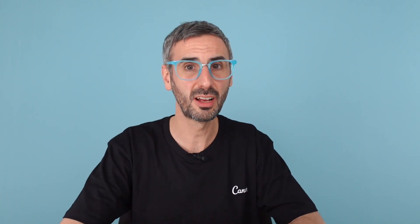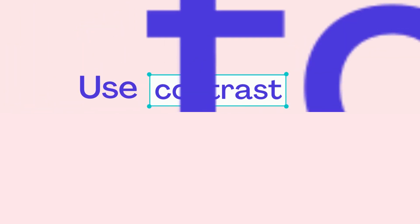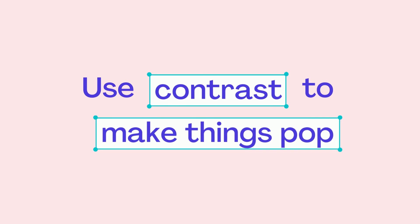When you start a design in Canva, ask yourself: what is the most important piece of information I want to communicate here? Understanding what needs to be emphasized is the first and most important step. Now let's have a look at different techniques to create emphasis, which leads me to design principle number 2: use contrast to make things pop.